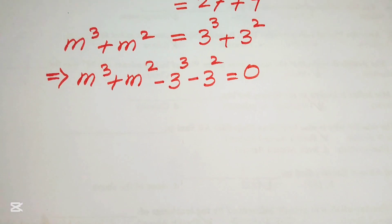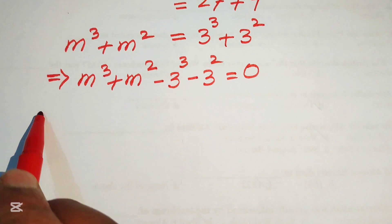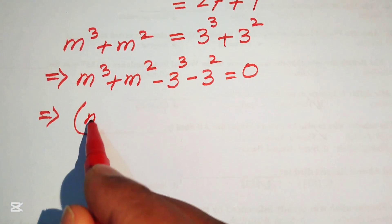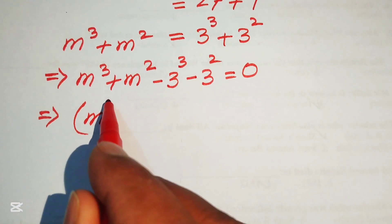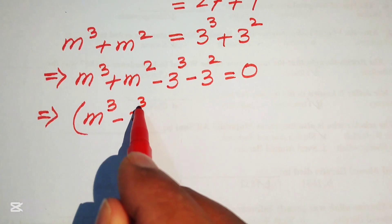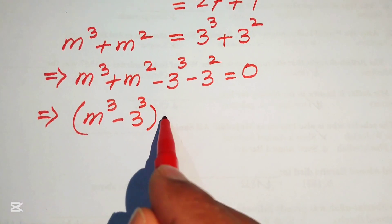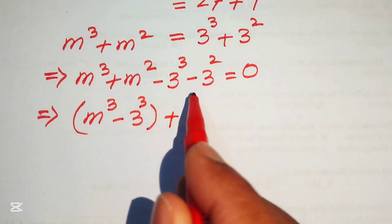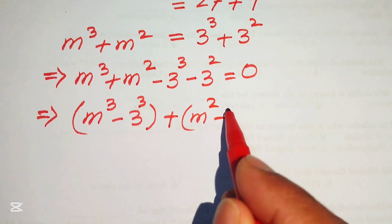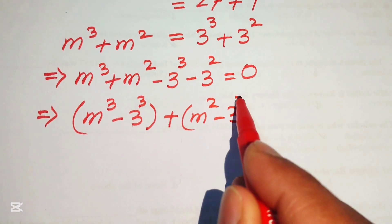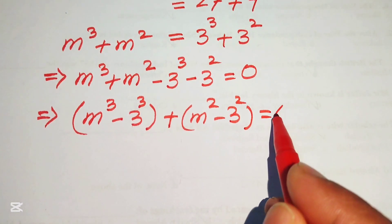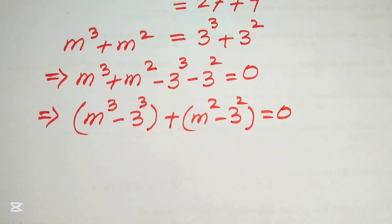In the next step we need to make pairs of the cubic terms and the square terms. So we have m cubed minus 3 cubed, and m squared minus 3 squared, and this equals to 0.